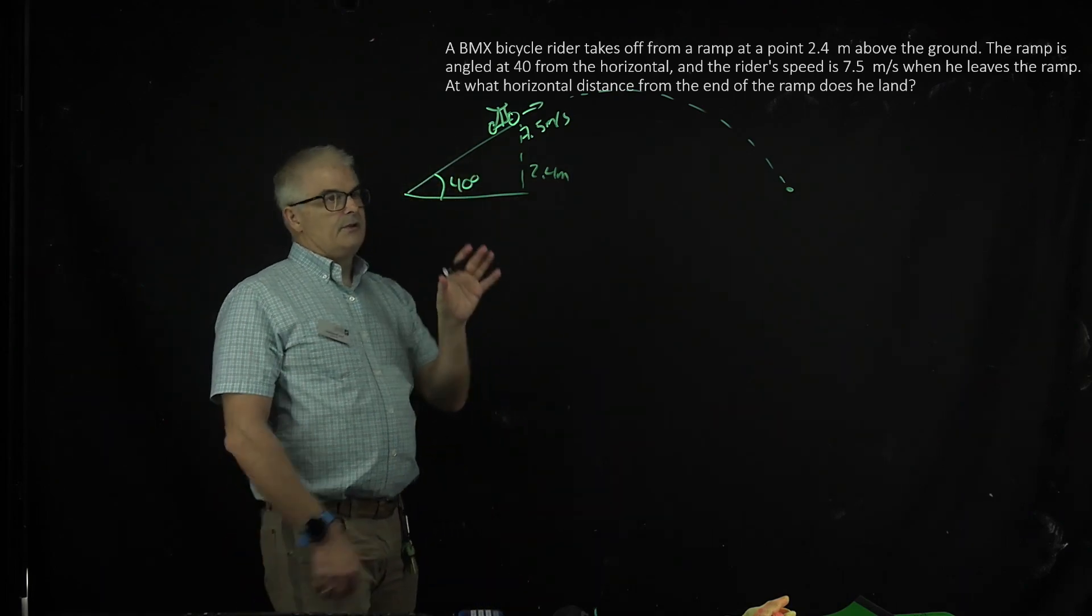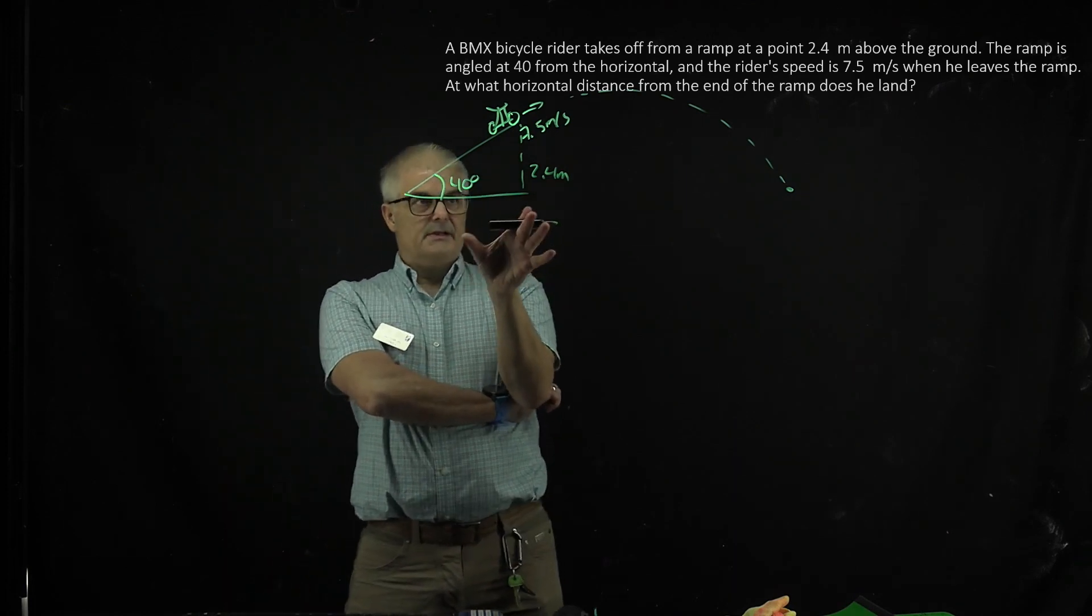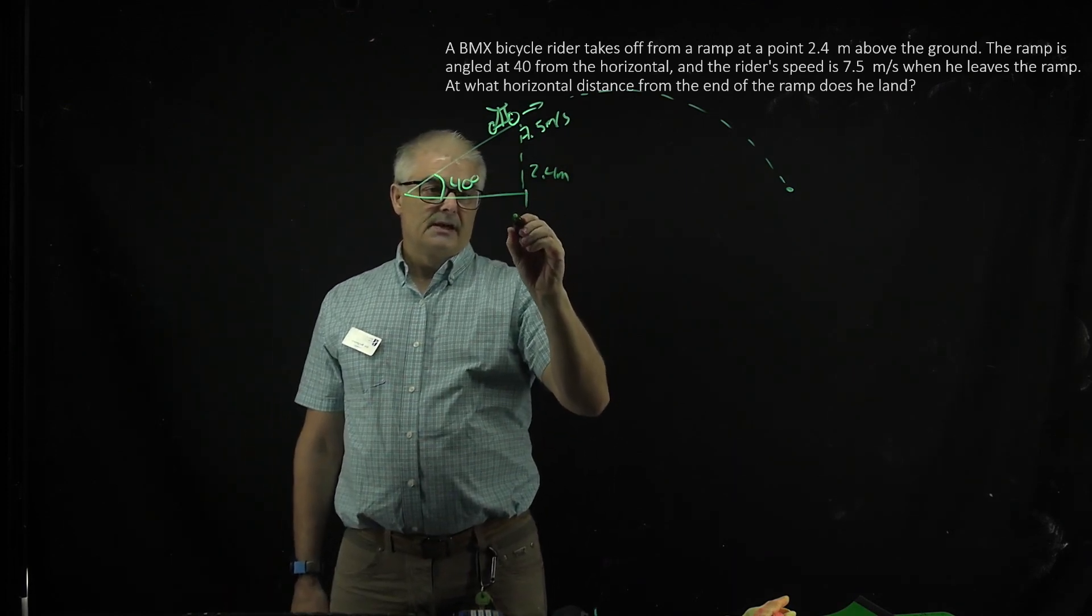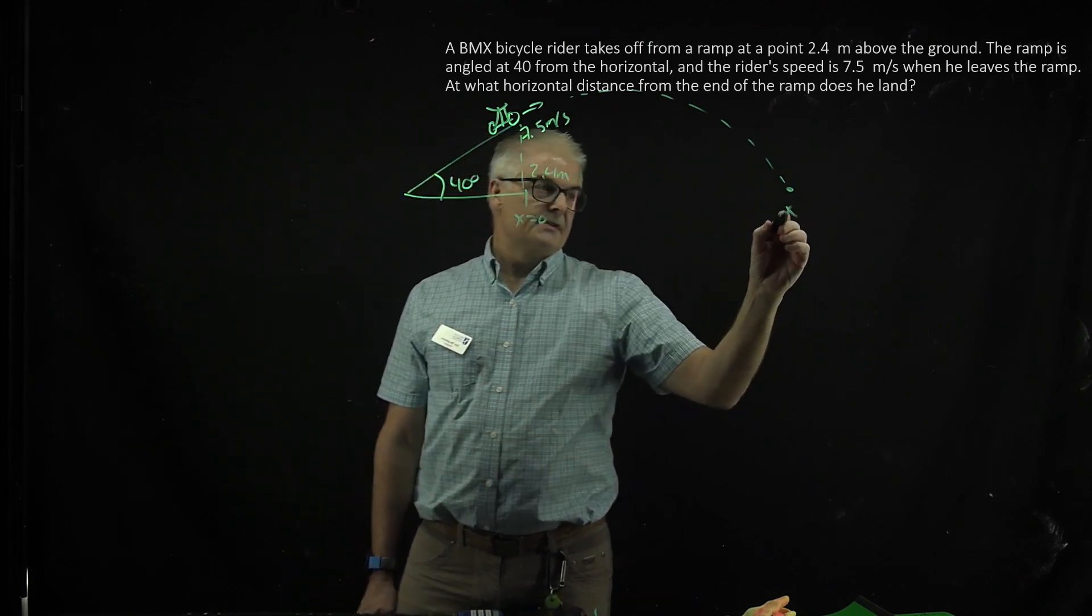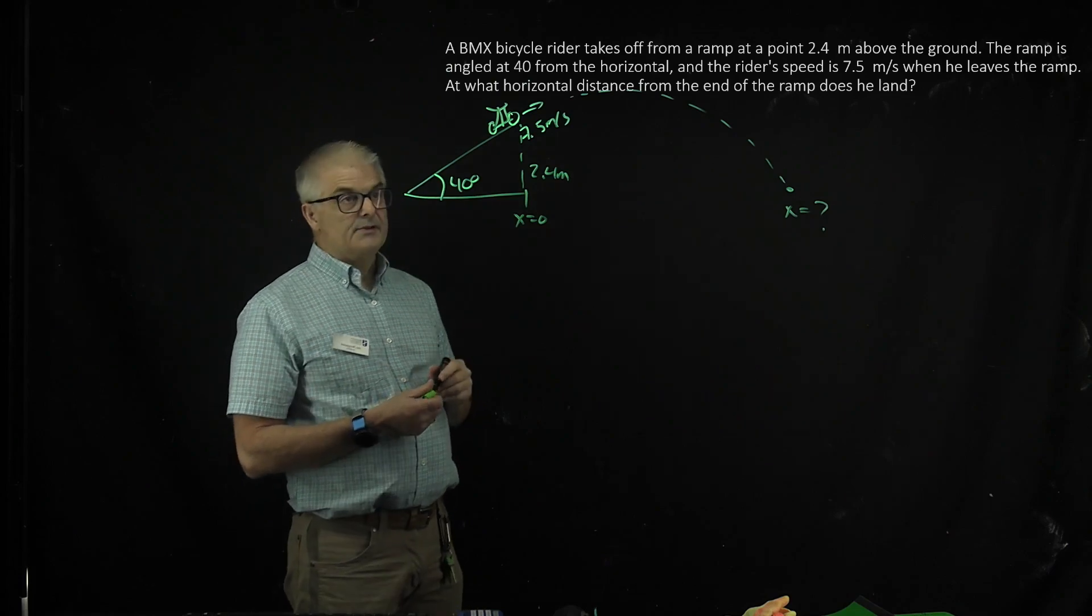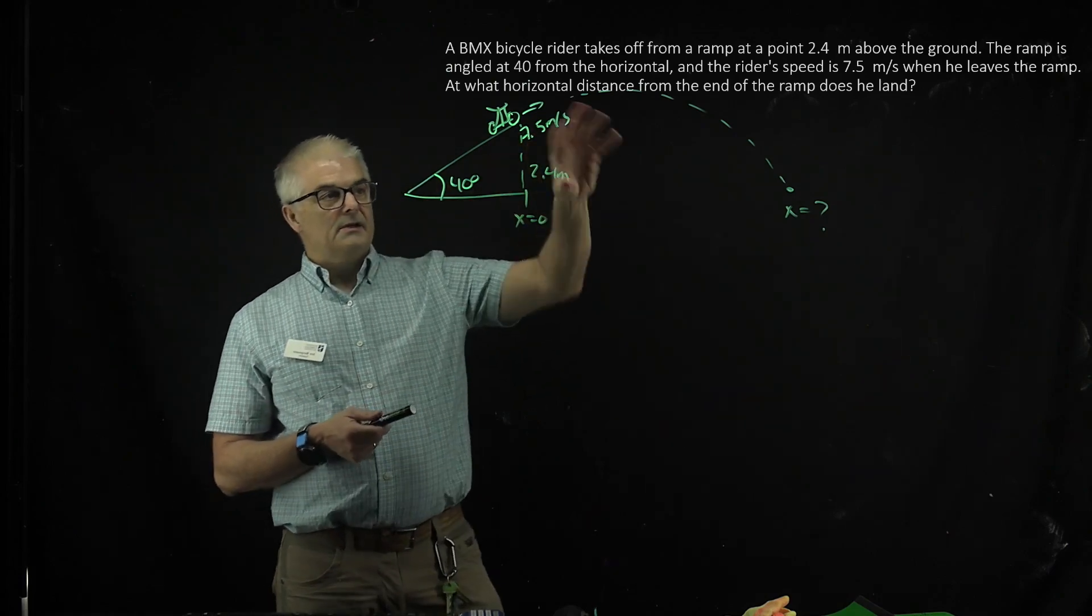I encourage you to watch video C again. We did an uneven problem, and the question is, this is x equal to 0. What is this x? We sometimes say, what is his range? How far does he travel after he shoots off here?